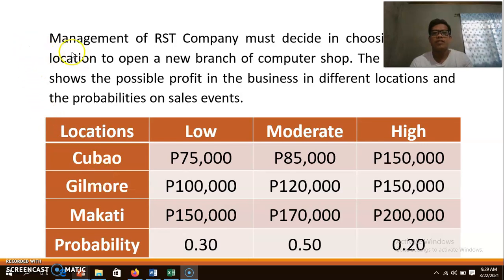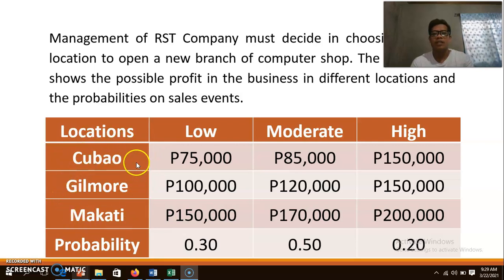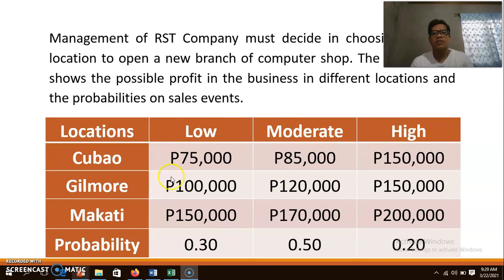Consider this problem: management of RST company must decide on an ideal location to open a new branch of a computer shop. The table shows the possible profit in different locations and probabilities for sales events. The three alternatives are Cubao, Gilmore, and Makati. The different events are the condition of the economy — whether it is low, moderate, or high. We apply three different decision environments.